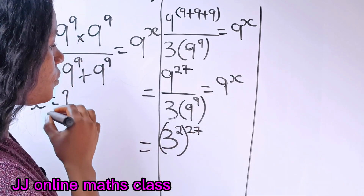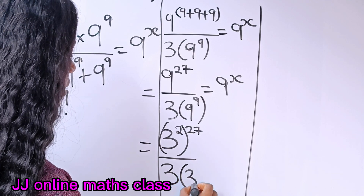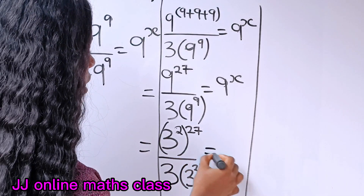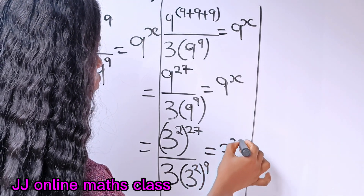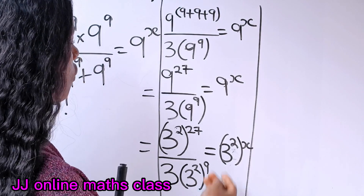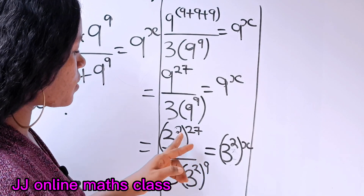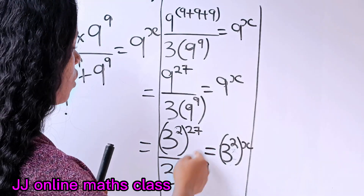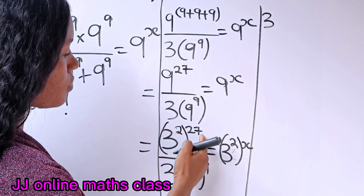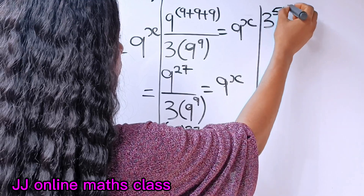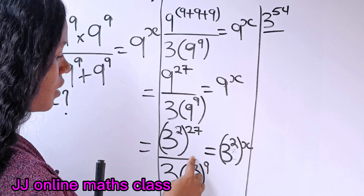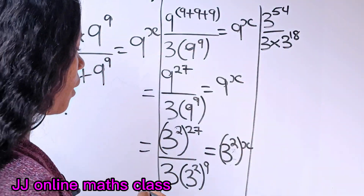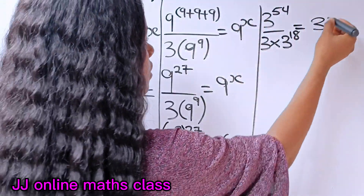That gives us three to the power of two raised to the power of 27, divided by three — and in the denominator, three to the power of two raised to the power of nine. Anytime you have two powers on a number, you multiply the powers according to the law of indices. So we write three raised to the power of two times 27, which is 54. In the denominator, three times three raised to the power of two times nine, which is 18. And the right-hand side is three to the power of 2x.